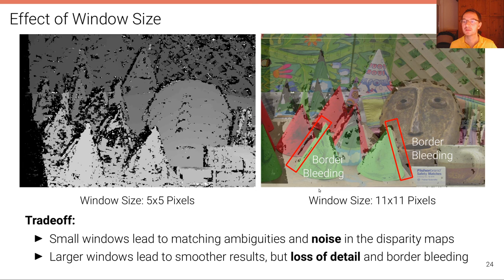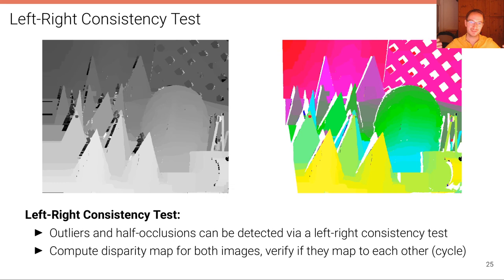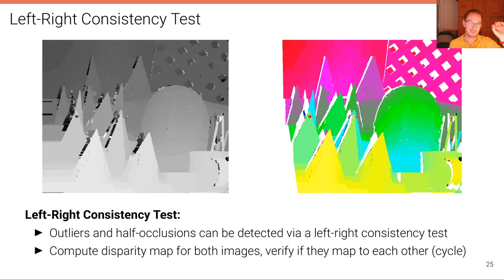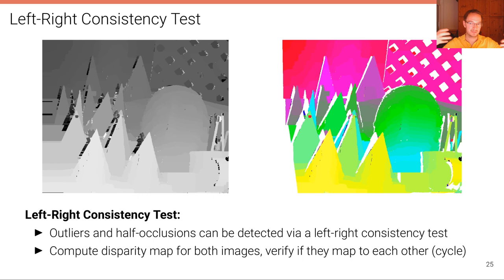To remove outliers, a prominent technique is the left-right consistency test. We compute the disparity map for both the left and right camera, then verify consistency: take the disparity at a pixel in the left image, move to the corresponding pixel in the right image using its disparity, and check if the disparity there matches the original. If they match, we keep the value; otherwise we remove it as an outlier.